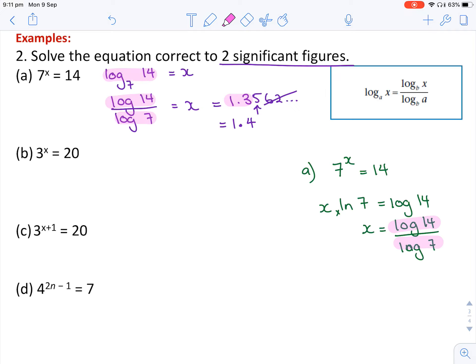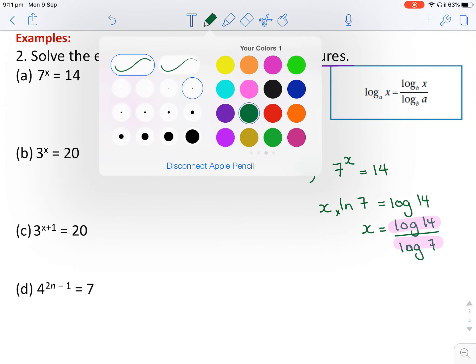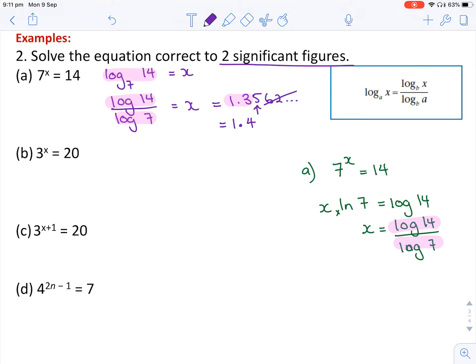Okay, so hopefully you've had a go at some of these, going through these answers quickly. So let's have a look at part b. Logging both sides, that would give me x log 3 equals log 20. Dividing through by the log 3, typing that straight into the calculator and rounding to two significant figures, you should get 2.7.